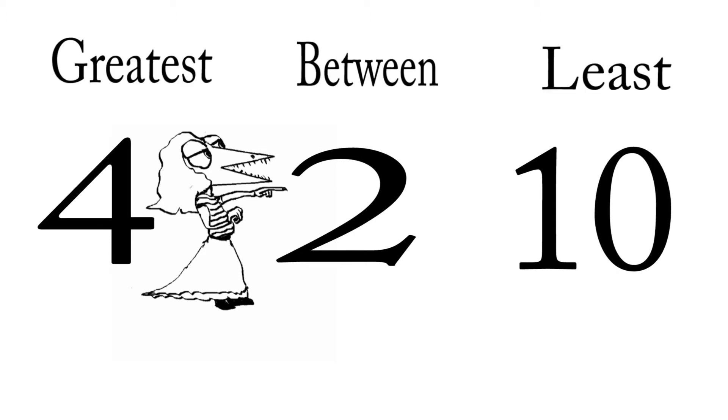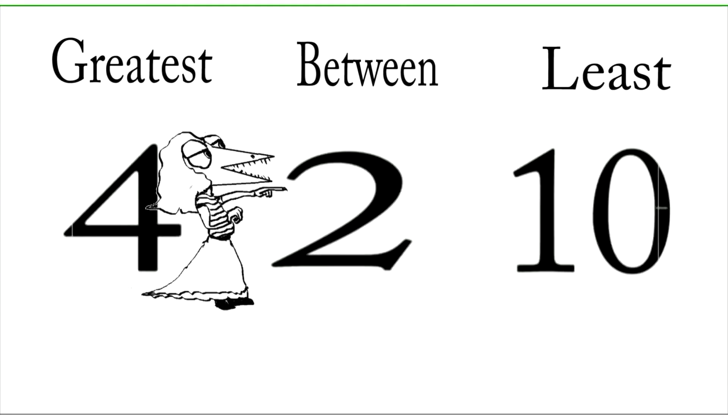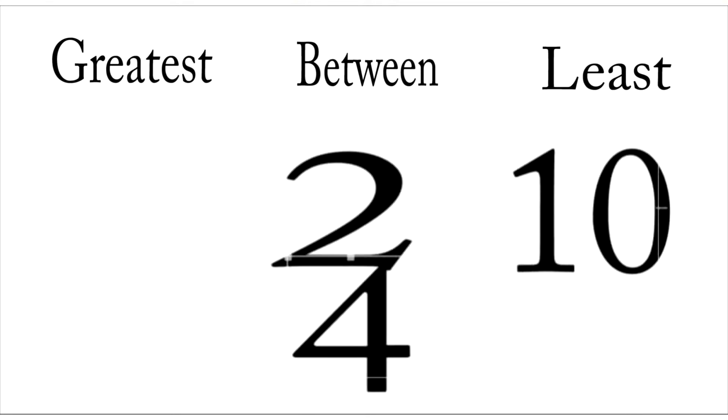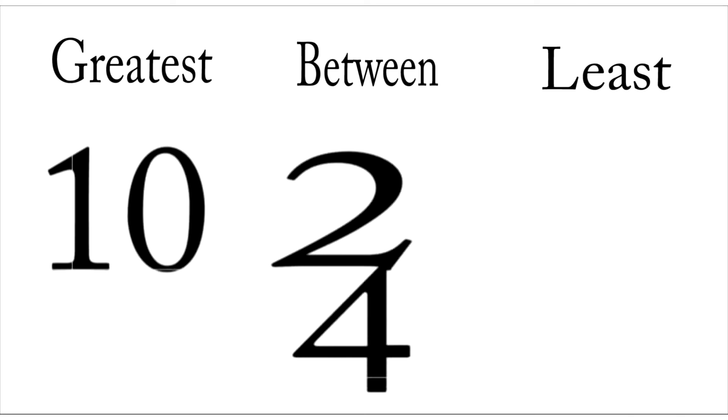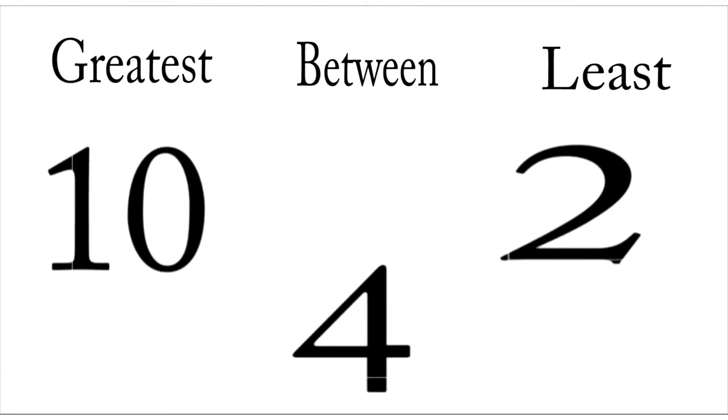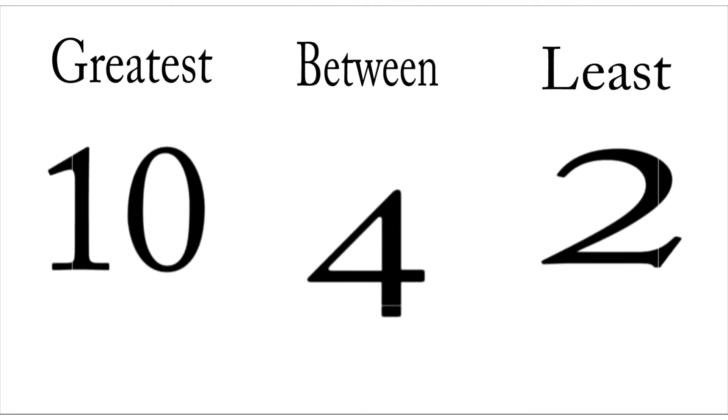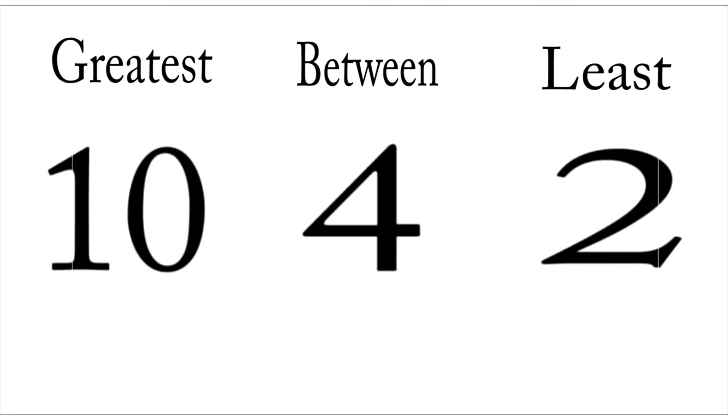Maria, can you tell me which of these numbers is the greatest? Ten is the greatest of these three. Well, how about the least? Two is the least of these three. How about this, Maria? Can you order these numbers from greatest to least? Sure. Just give me a second. Oh-ho! Excellent work. Thank you.